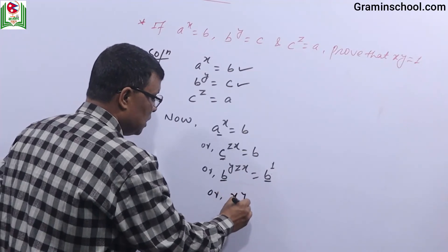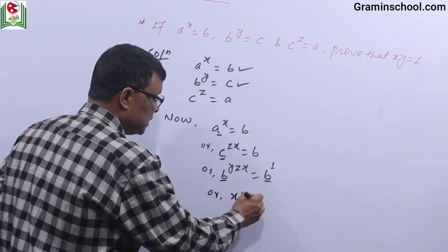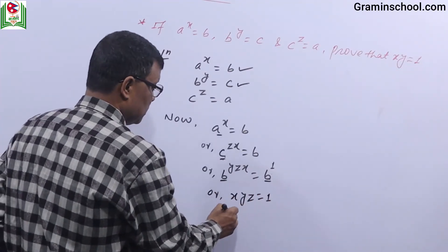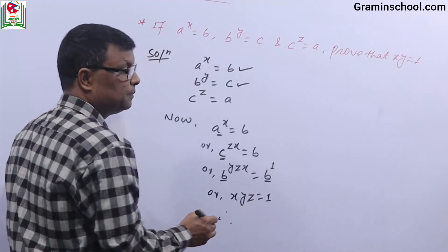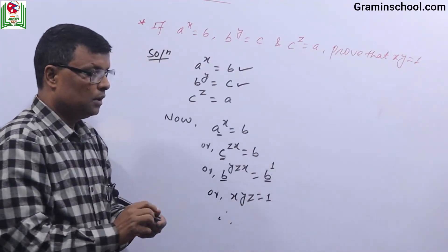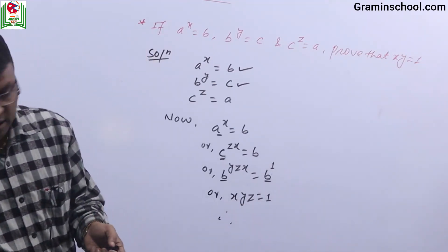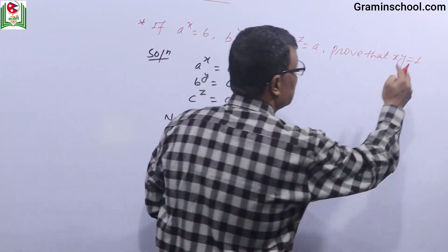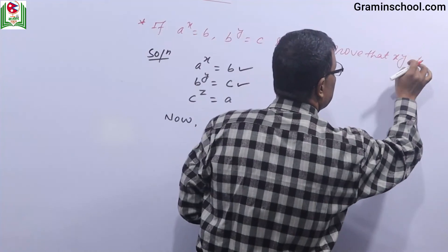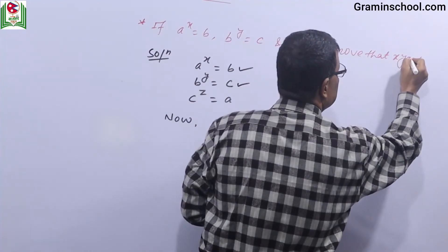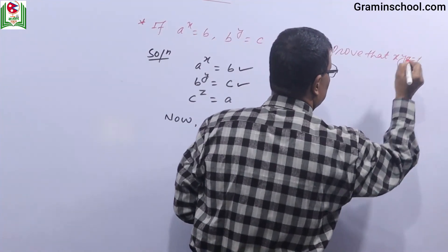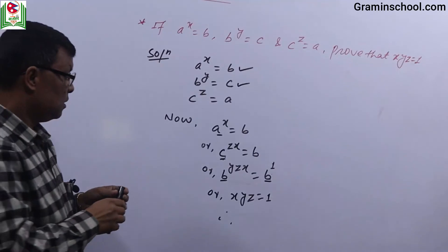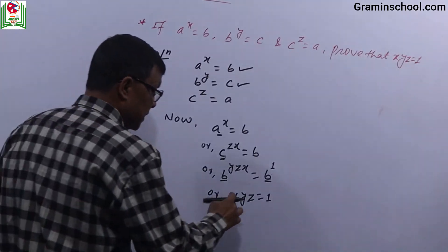Y Z X is equal to 1, therefore X Y Z is equal to 1. Prove that X Y Z is equal to 1.